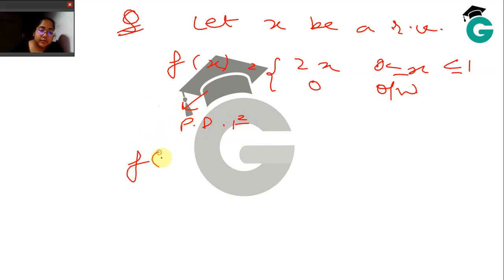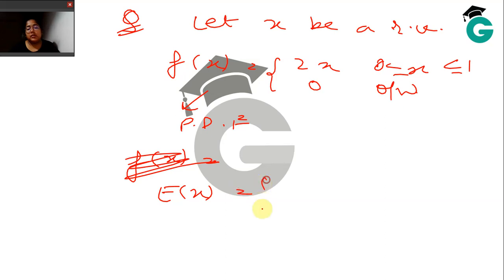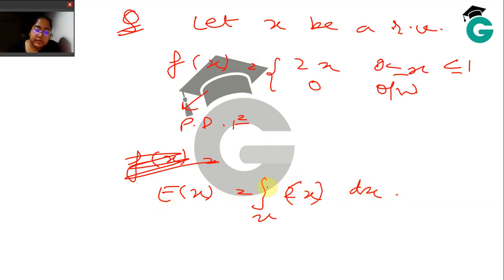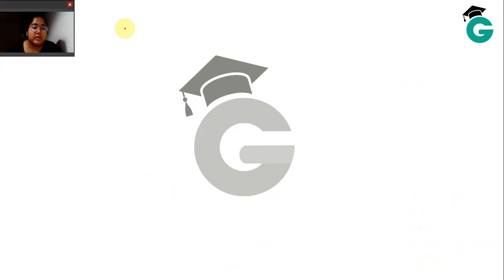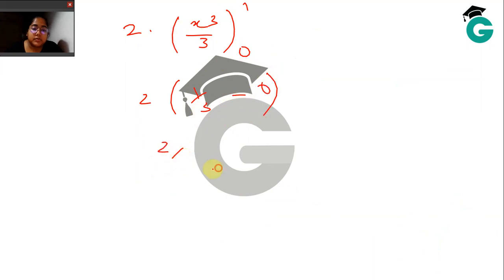Since f(x) is given, the expectation of X equals the integral over x of x · 2x dx, which is the integral of 2x² dx from 0 to 1. That equals 2 · x³/3 evaluated from 0 to 1, giving 2 · (1/3) − 0, so 2/3 is the expected value of X.